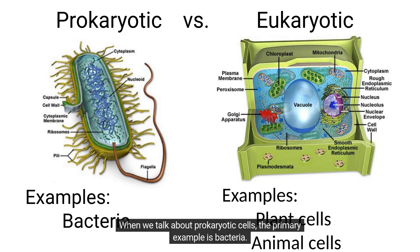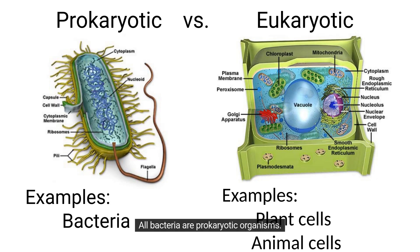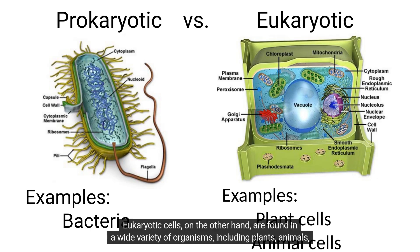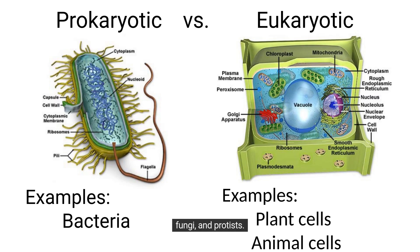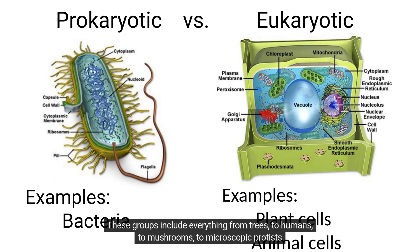When we talk about prokaryotic cells, the primary example is bacteria. All bacteria are prokaryotic organisms. Eukaryotic cells, on the other hand, are found in a wide variety of organisms, including plants, animals, fungi, and protists. These groups include everything from trees to humans, to mushrooms, to microscopic protists.